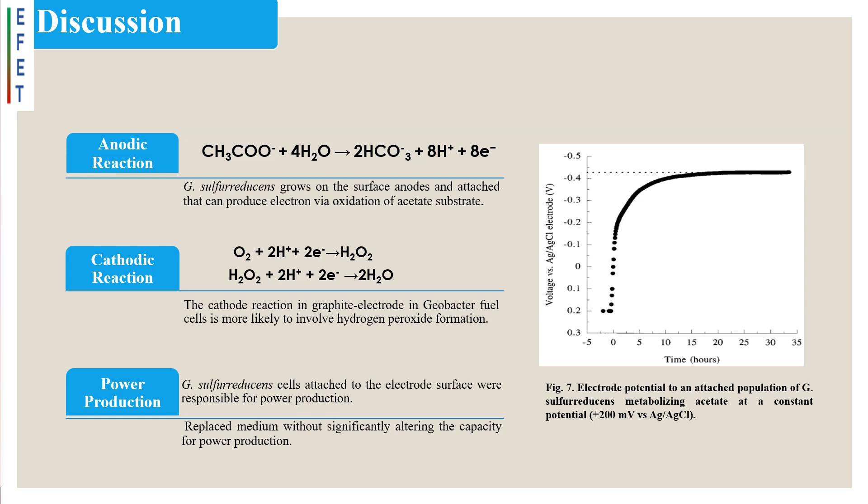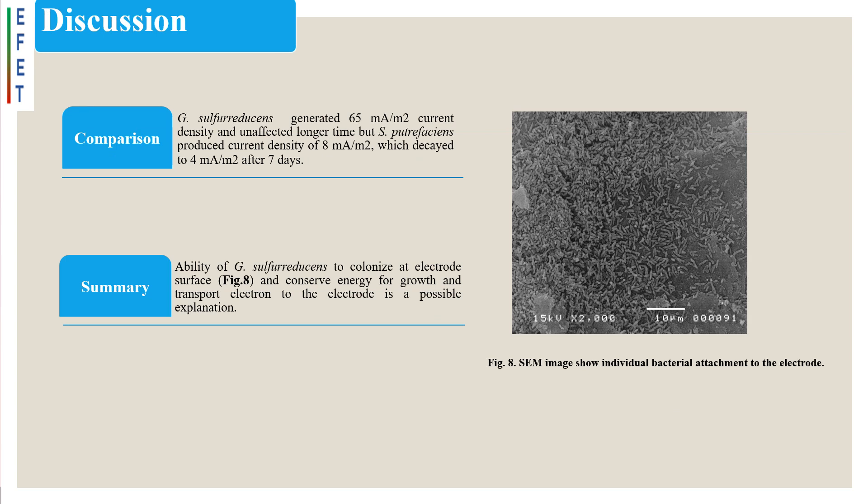Attached cells were capable of transferring electrons under poised potential conditions in fuel cells. Comparison with other microorganisms: Geobacter sulfereducens generated 65 mA per square meter current density and remained unaffected for longer time, but Shewanella putrefaciens produced current density of 8 mA per square meter, which decayed to 4 mA per square meter after 7 days.